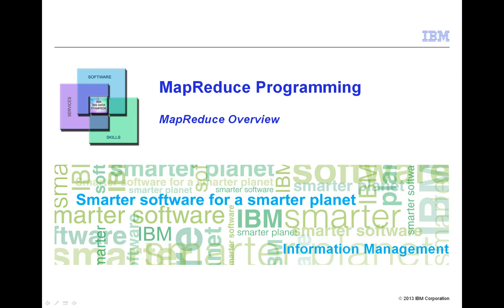The key contributions of the Hadoop MapReduce framework are not the actual map and reduce functions, since you supply differing map and reduce functions — generally in the form of Java classes — depending on the work that needs to be done. Rather, the key contribution is the scalability and fault tolerance achieved for a variety of applications by optimizing the execution engine once. In addition, for each specific problem you supply the mapper algorithm, the reducer algorithm, and any appropriate parameters.